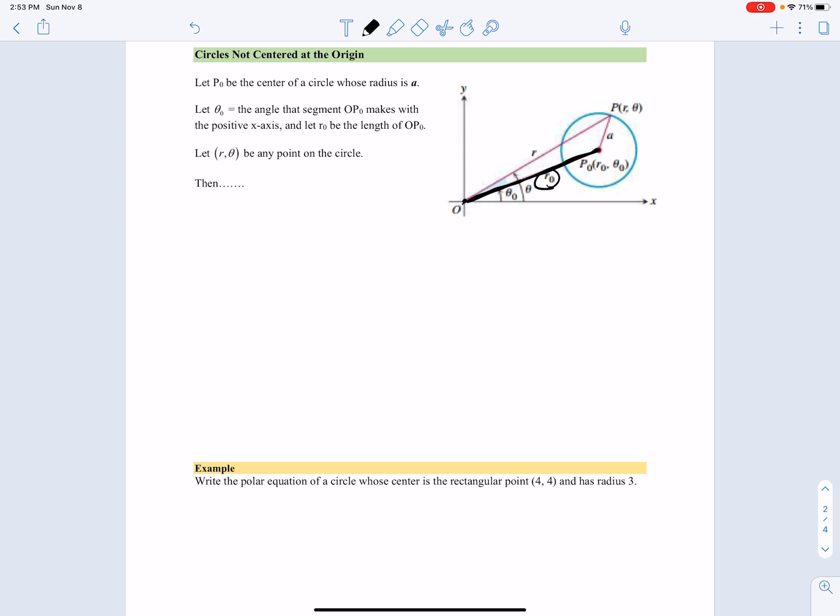I'm going to say that the circle has radius a. And what we want to do is be able to describe any point (r, theta) that's on the circle. What that means is if I go to any point on the circle and draw a line from the origin to that point, it's going to have a distance of r.